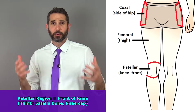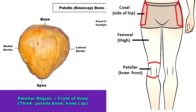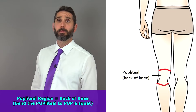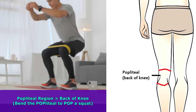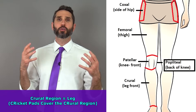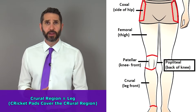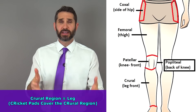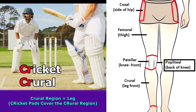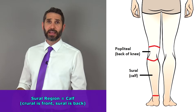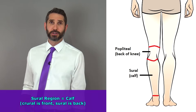The patellar region refers to the front of your knee — that bone on your kneecap is called the patella. On the backside of your knee, you have the popliteal area, and you have to bend your popliteal if you want to pop a squat. The crural region is the front area of your leg from the knee down to the ankle — remember the game of cricket, where players wear pads covering the crural region. The back of the leg, where the calf muscle is, is called the sural region.